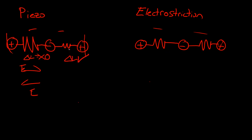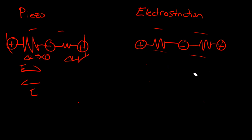So there we get a net displacement. But if we look over here, if we apply an electric field, these are the same spring. And as we mentioned earlier, if you have the same spring, there will be no net displacement. But hold on — we said this is electrostriction. There has to be some displacement. So how can we have the same spring and have net displacement? To answer this question, we have to know the quality of bonds.